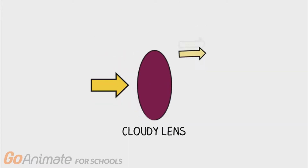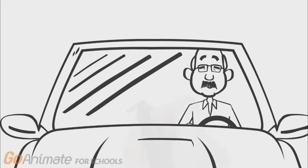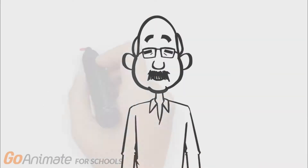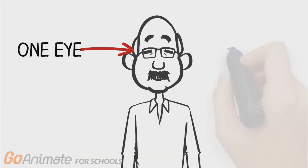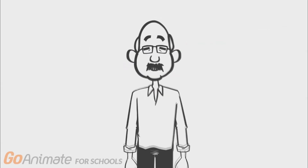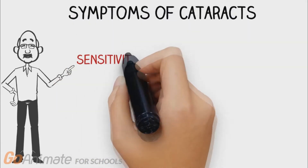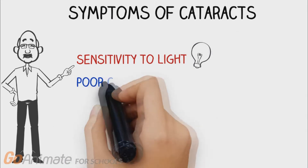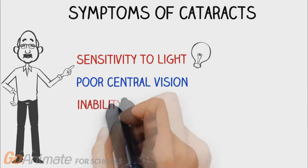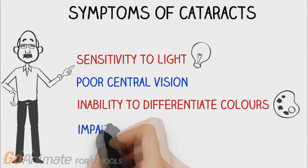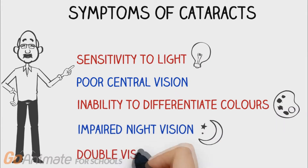This cloudy lens blocks light from entering your retina, similar to how a dirty car windshield blocks light from shining through. A cataract can develop in either one or both of your eyes. Some of the symptoms of cataracts include sensitivity to light, poor central vision, inability to differentiate colors, impaired night vision, and double vision.